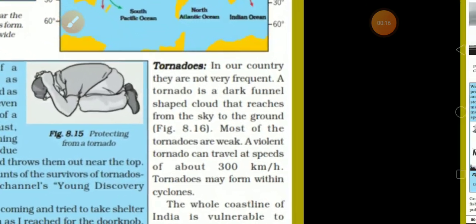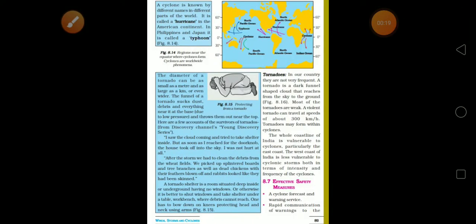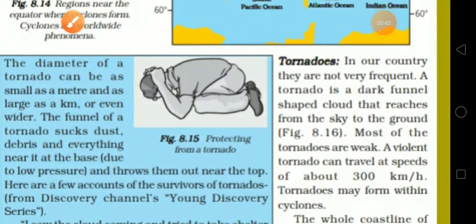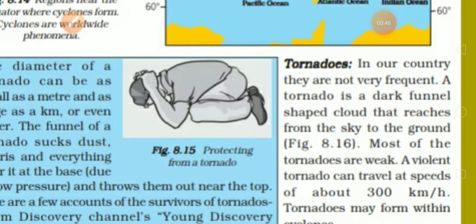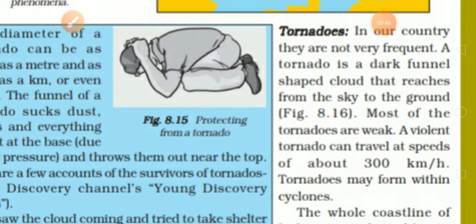Tornadoes are not very frequent in India. A tornado is funnel shaped, in which the cloud reaches from the sky to the ground. Most tornadoes are weak — not as strong as a cyclone or thunderstorm. The most powerful tornadoes can travel at a speed of 300 kilometers per hour.